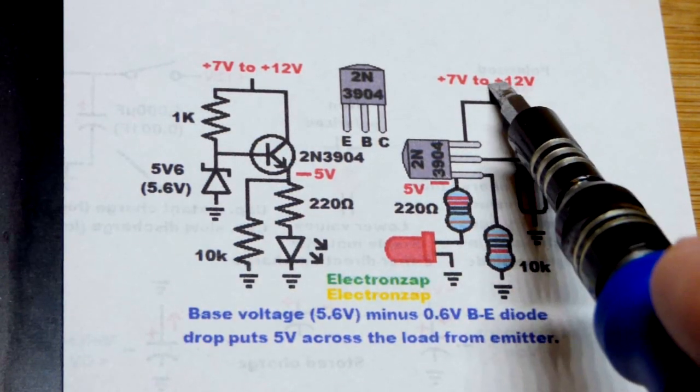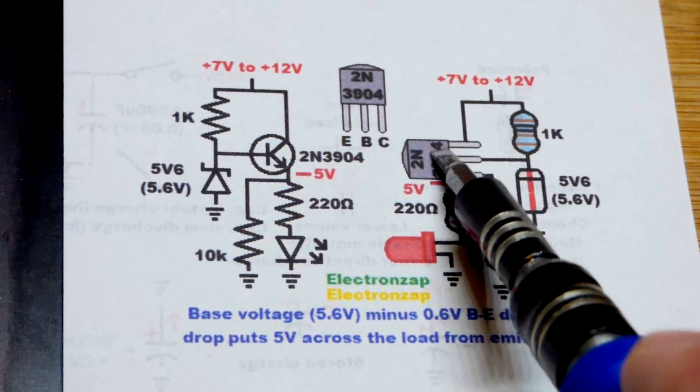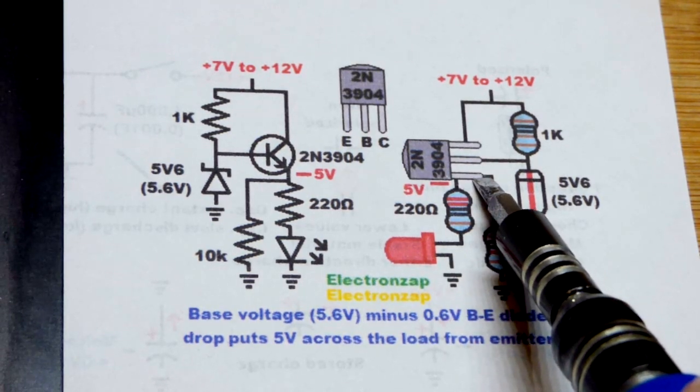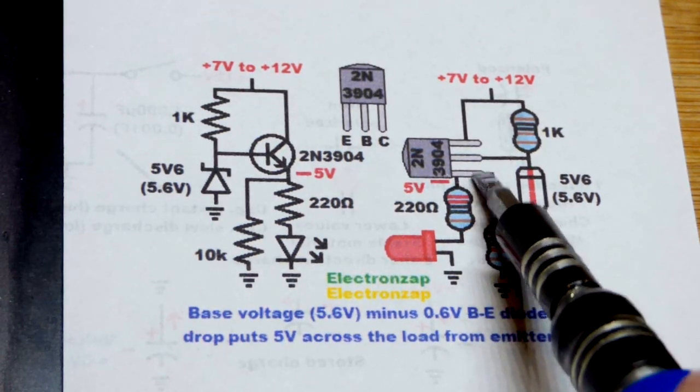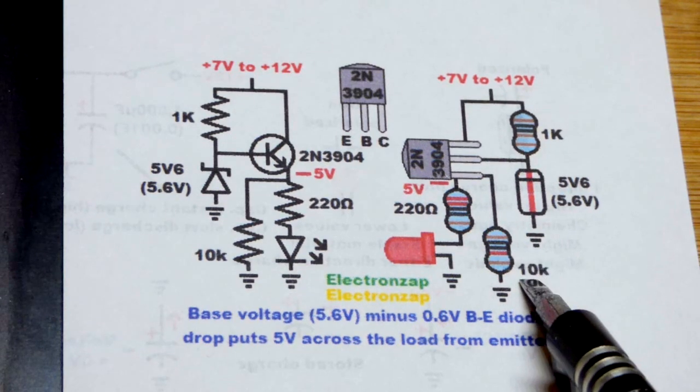And so that will hold 5 volts steady. The current needed to hold that voltage is going to be delivered by the transistor. That's just the way it works when you have it wired as an emitter follower.